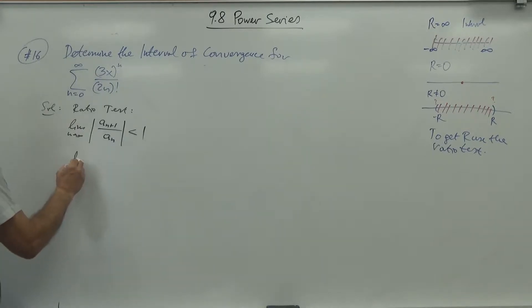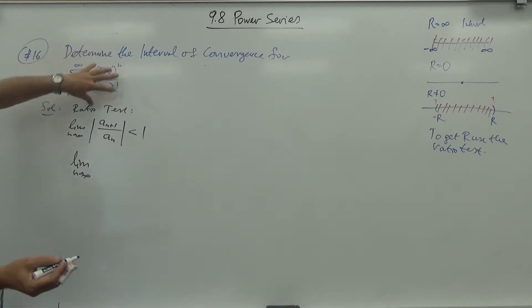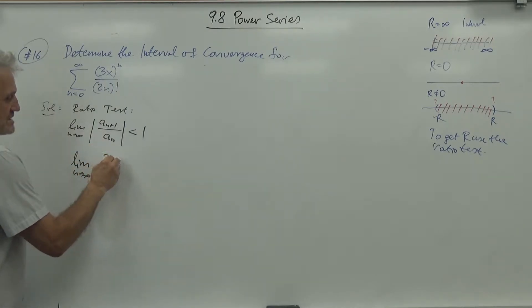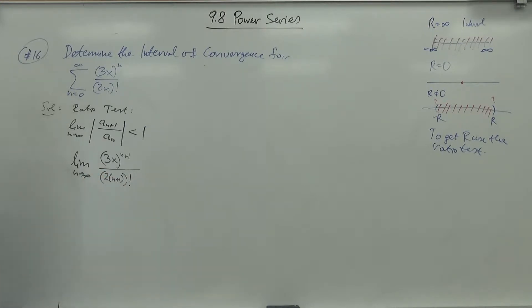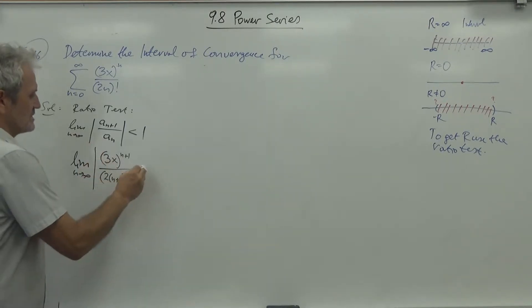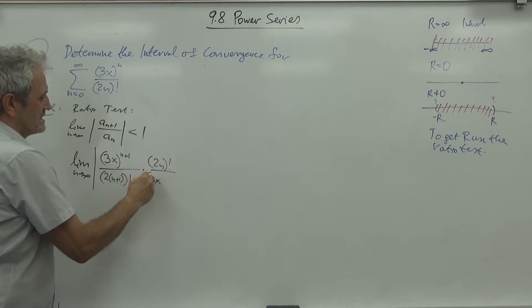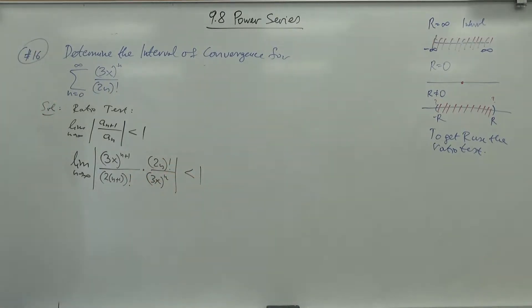We apply the ratio test. We want the limit of the absolute value of a_{n+1} over a_n as n goes to infinity to be less than 1. We write (3x)^{n+1} over (2(n+1))! times the reciprocal of the previous term, which is (2n)! over (3x)^n.